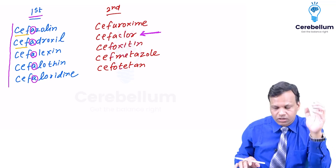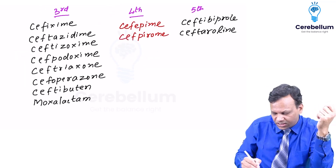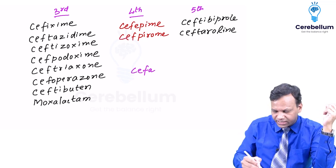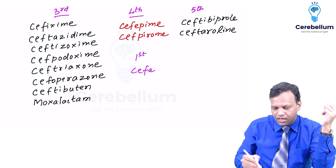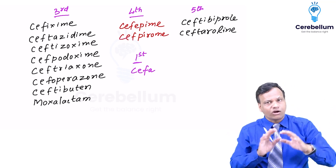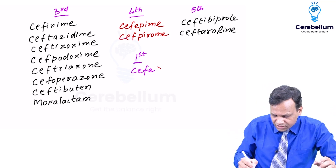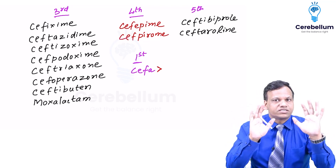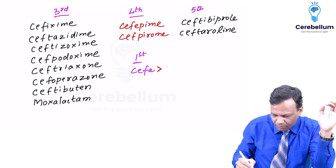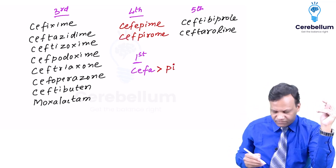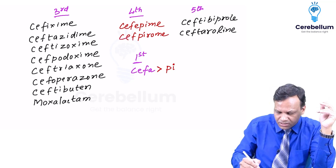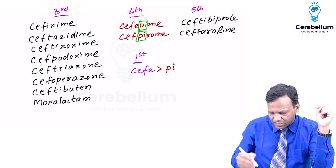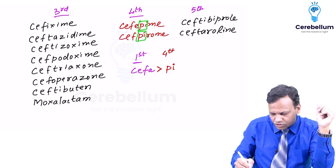So the rule to follow is: first, check whether the name starts with 'cefa' — if yes, it is first generation (one exception: cefaclor). If it does not start with 'cefa', then check whether the name contains 'pi'. If 'pi' is present, it is fourth generation. Remember: fourth generation drugs contain 'pi' in the name.